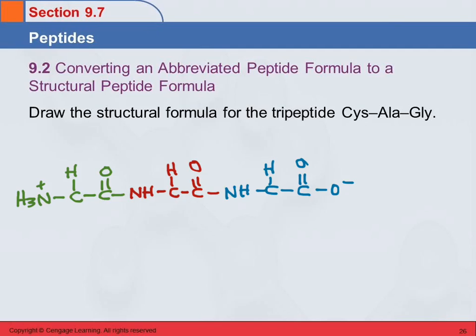So this is the C-terminal on the right. The N-terminal is on the left. And now to finish this we need to put the side chains on.